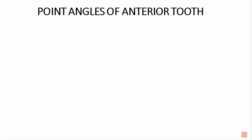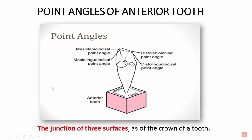Moving on to point angles — the junction of three surfaces of the crown of a tooth is known as a point angle. For anterior teeth: the mesiolabial incisal point angle, the mesiolingual incisal point angle, the distolabial incisal point angle, and the distolingual incisal point angle. For example, the mesial, labial, and incisal surfaces together form the mesiolabio incisal point angle.